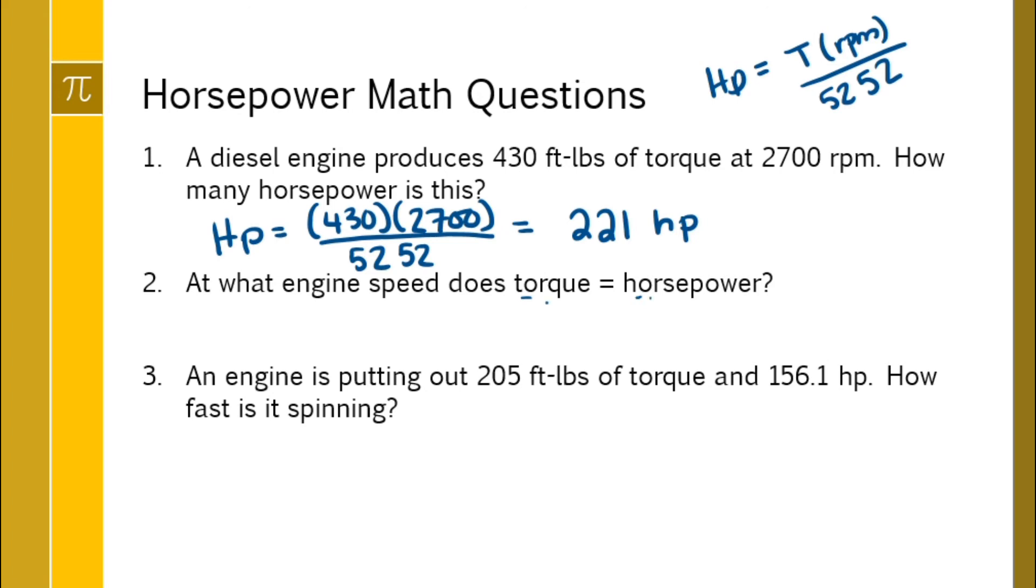So let's say the horsepower was 100 and the torque was 100, and we have to multiply that by an RPM and divide it by 5252. If the 100s are the same on either side,